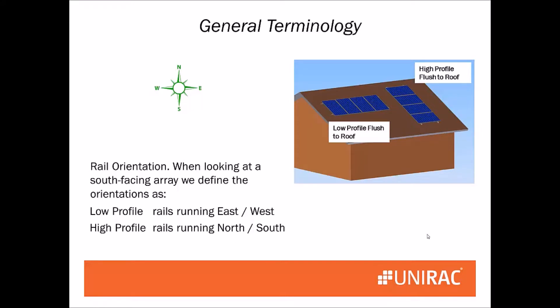With rail orientation we're talking about the direction the rail is running. Low profile, the rails are running east-west. High profile, they're running north-south, up and down.